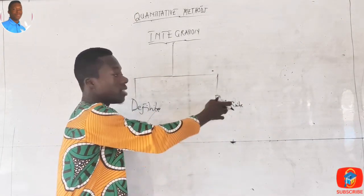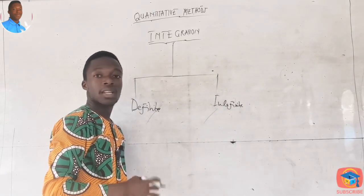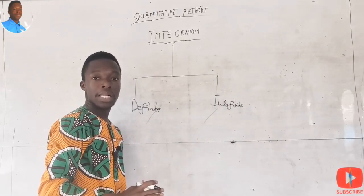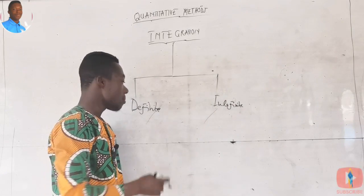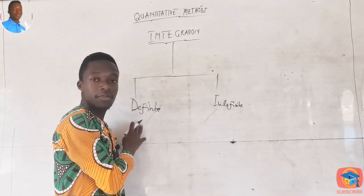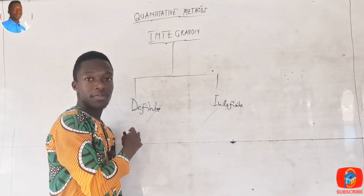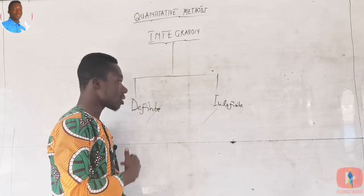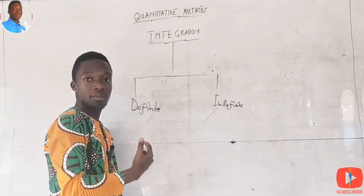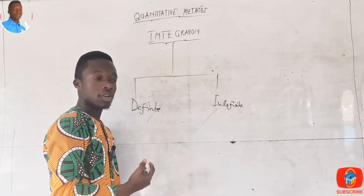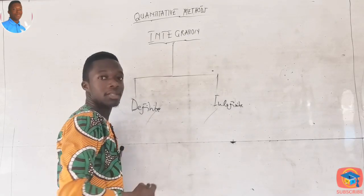The indefinite integral means that in the function there is no limit. The definite integral tells us that in the function there is a limit. As you move along you will get to know the limit I'm trying to put across.